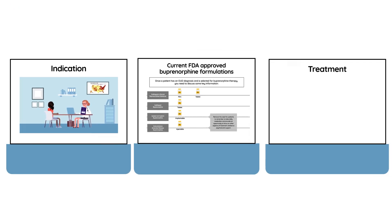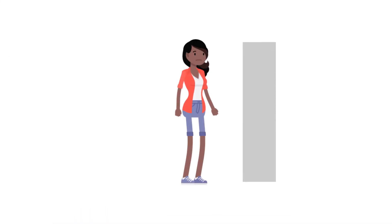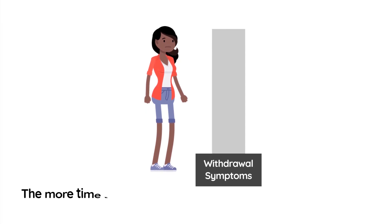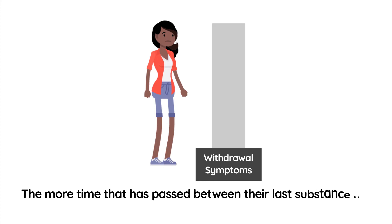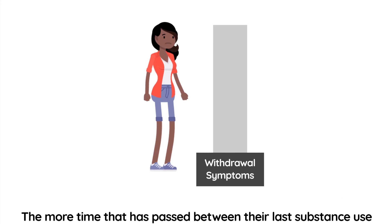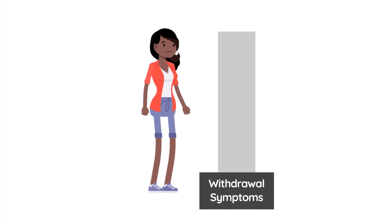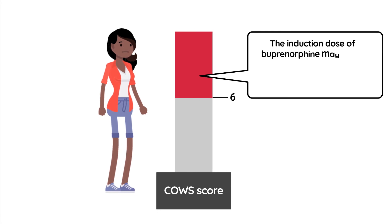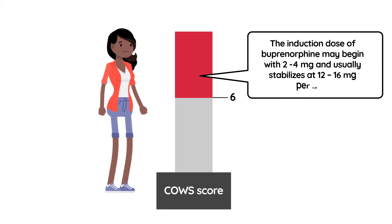How do I start a patient on buprenorphine? First, it is critical to ensure that the patient has attained a sufficient level of withdrawal before the induction of buprenorphine. The more time that has passed between their last substance use and their first dose of buprenorphine, the easier induction will be. Patient withdrawal can be assessed using the Clinical Opiate Withdrawal Scale, COWS, and induction should occur with a COWS score of 6 or higher. The induction dose of buprenorphine may begin with 2 to 4 milligrams and usually stabilizes at 12 to 16 milligrams per day.